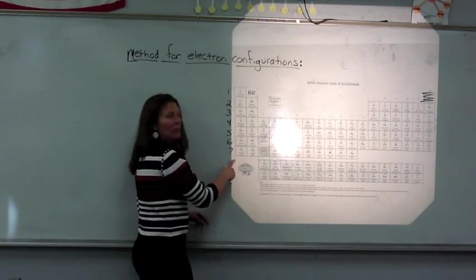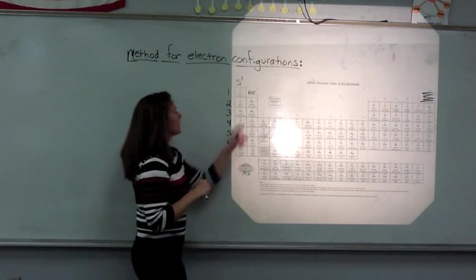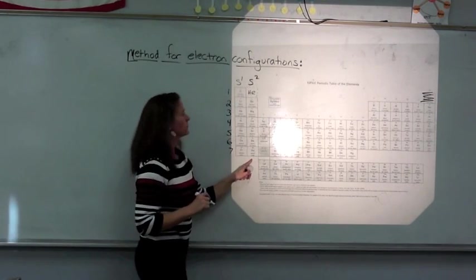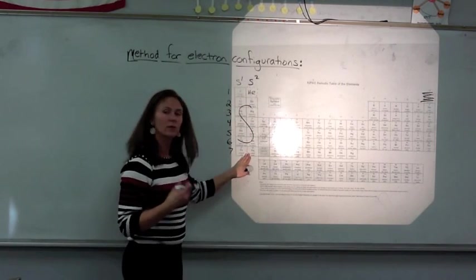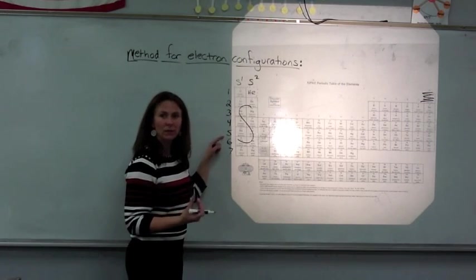And we know that all of these elements here are now currently filling with one electron in the s orbital. All of these elements here have two electrons in the s orbital. This is our s block. All of these elements in these first two rows are currently filling their s sub level, and it depends on what energy level they are filling.